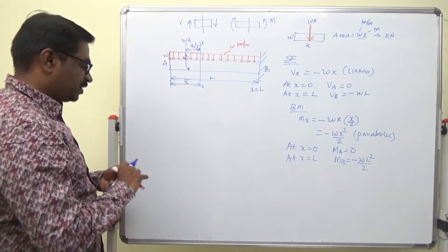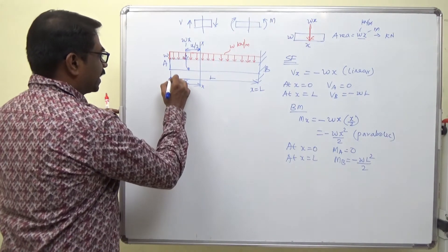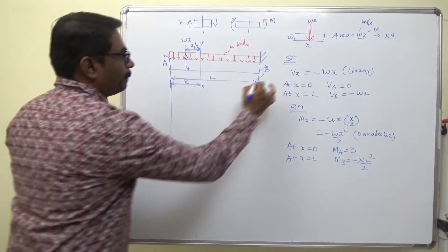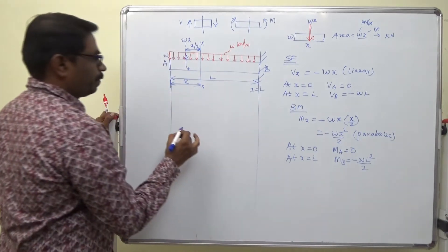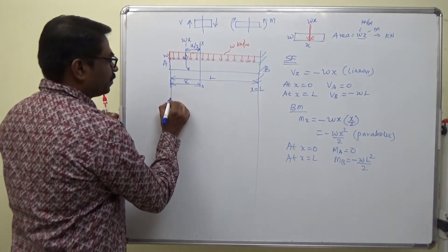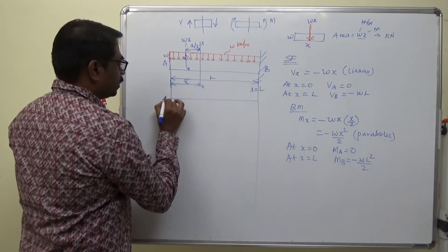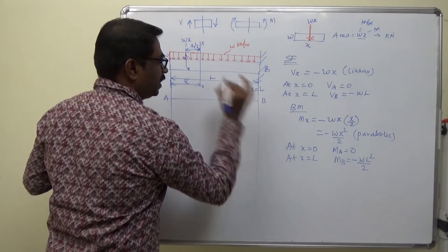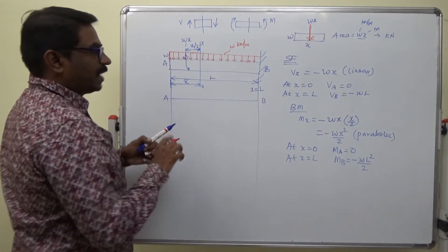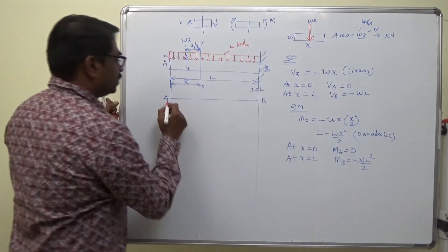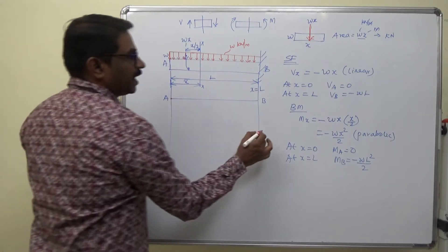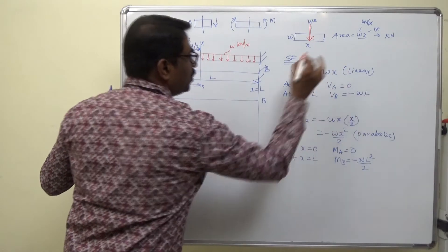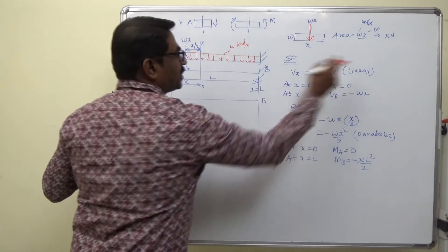Now I am going to draw the shear force and bending moment diagram. Negative A, B. At A, it is 0. At B, W into L. The variation is linear.